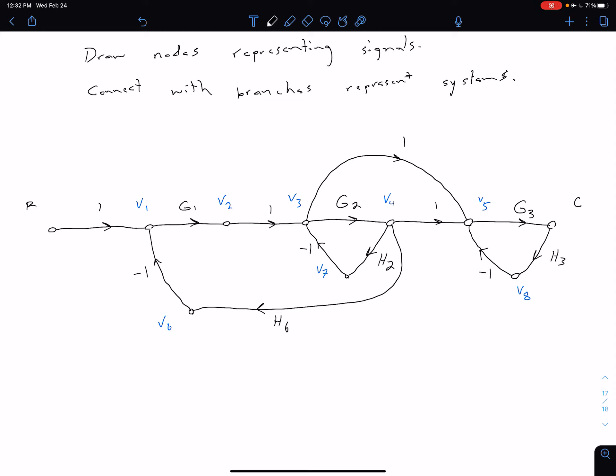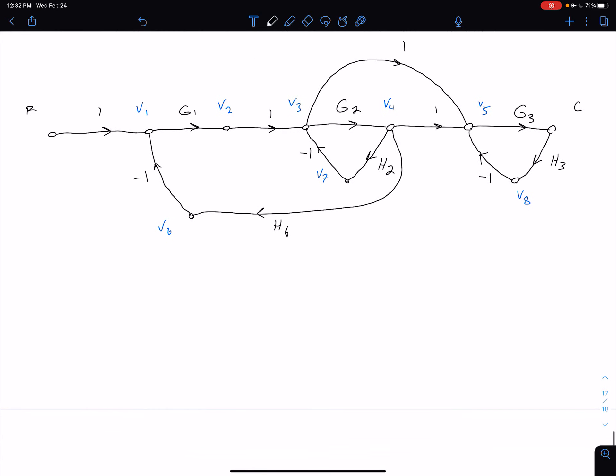We can actually simplify this a little bit further by removing signals with one branch in and one branch out. So we can simplify by removing signals with one branch in, one branch out.